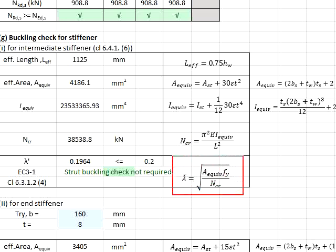The slenderness ratio is obtained by using these equations, where you require area equivalent and also the critical axial loads. The equation for the critical axial loads is given here. It requires an equivalent second moment of inertia and also an effective length of the stiffener. So with that, we need to compute all these values in order for us to be able to determine the slenderness ratio of the member.